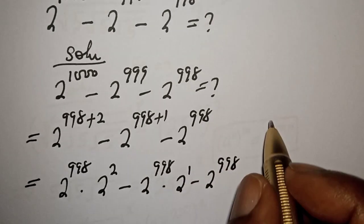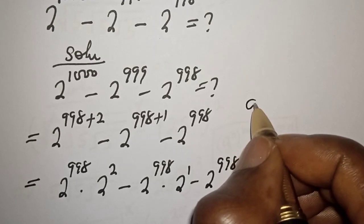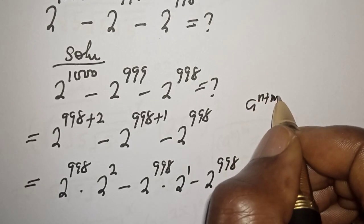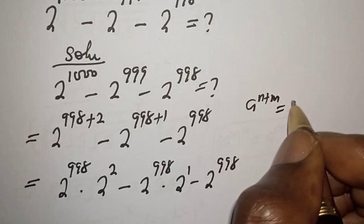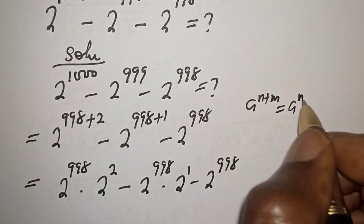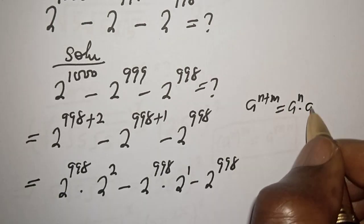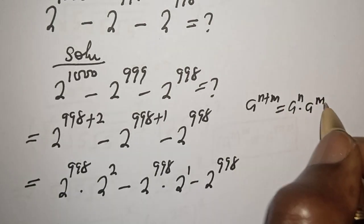That is, if you have a raised to power n plus m, this is equal to a raised to power n multiplied by a raised to power m.